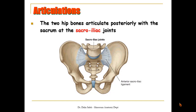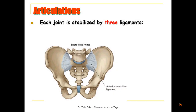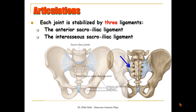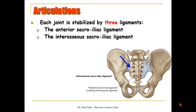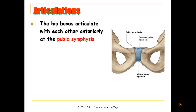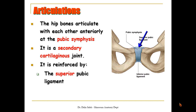The two hip bones articulate posteriorly with the sacrum at the sacroiliac joints. Each joint is stabilized by three strong ligaments: the anterior sacroiliac ligaments, the interosseous sacroiliac ligaments, and the posterior sacroiliac ligaments. Anteriorly, the two hip bones articulate with each other at the pubic symphysis, which is a secondary cartilaginous joint reinforced by the superior and the inferior pubic ligaments.